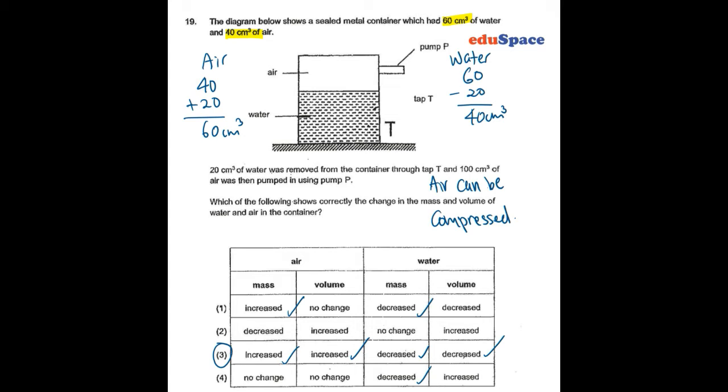We add 100 cm3 of air in. Since air can be compressed, the volume remains at 60 cm3.